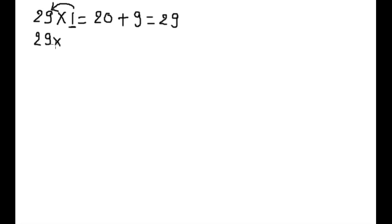29 into 2. Double of 2 is 4. Put 0 plus 2 into 9, 18. This is 58. In this way we will do up to 10.